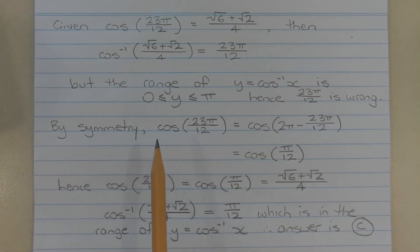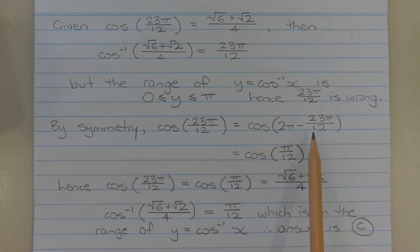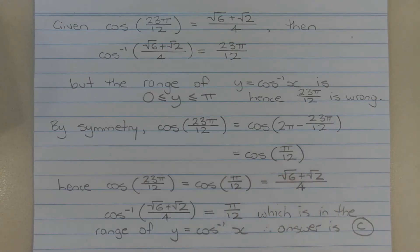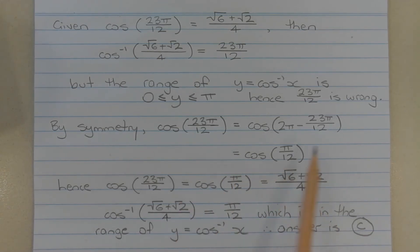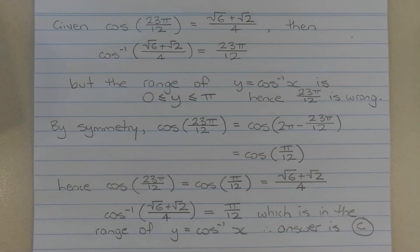By symmetry, cos of 23π over 12 is equal to cos of (2π minus 23π over 12), which equals cos of π over 12. Hence, cos of 23π over 12 equals cos of π over 12, which equals (√6 + √2) over 4. Taking the inverse cos of both terms, we have inverse cos of (√6 + √2) over 4 is equal to π over 12, which is in the range of y equals inverse cos of x.